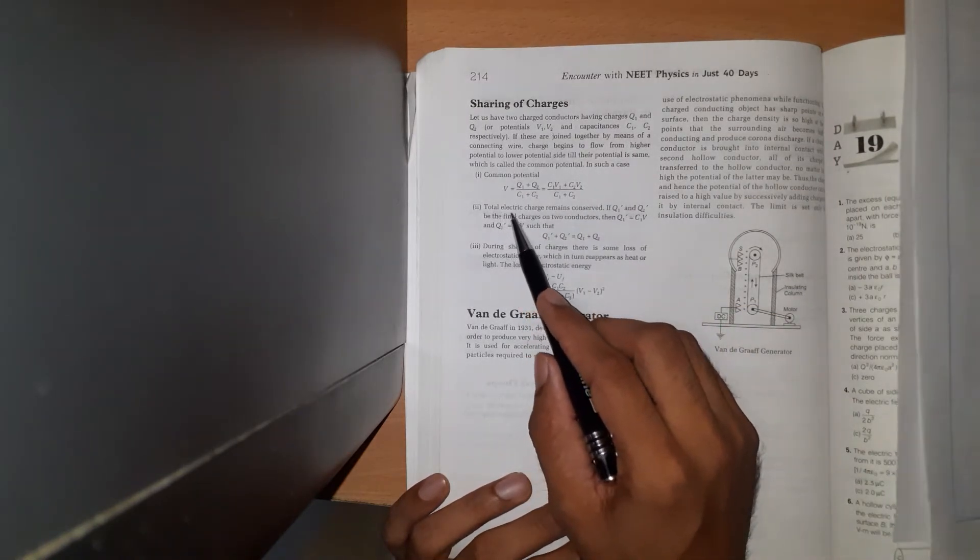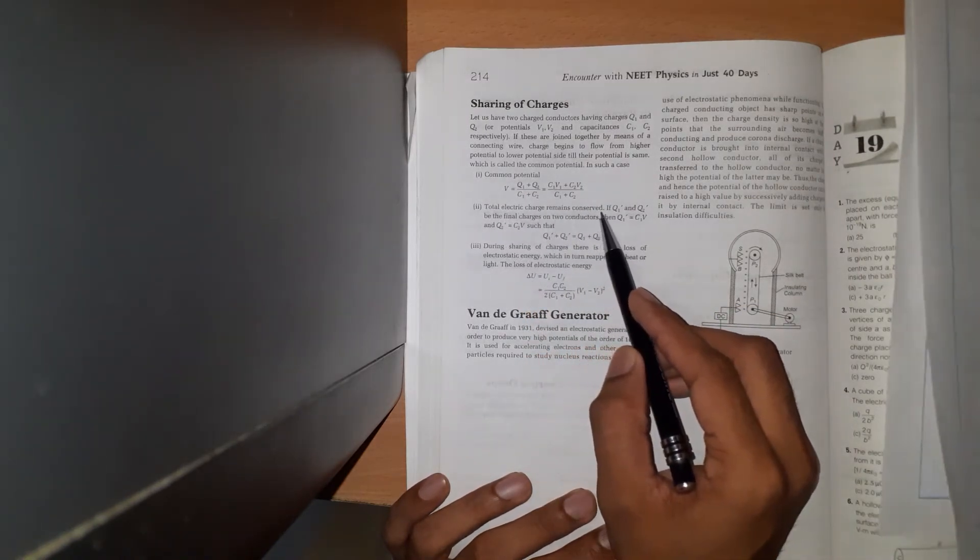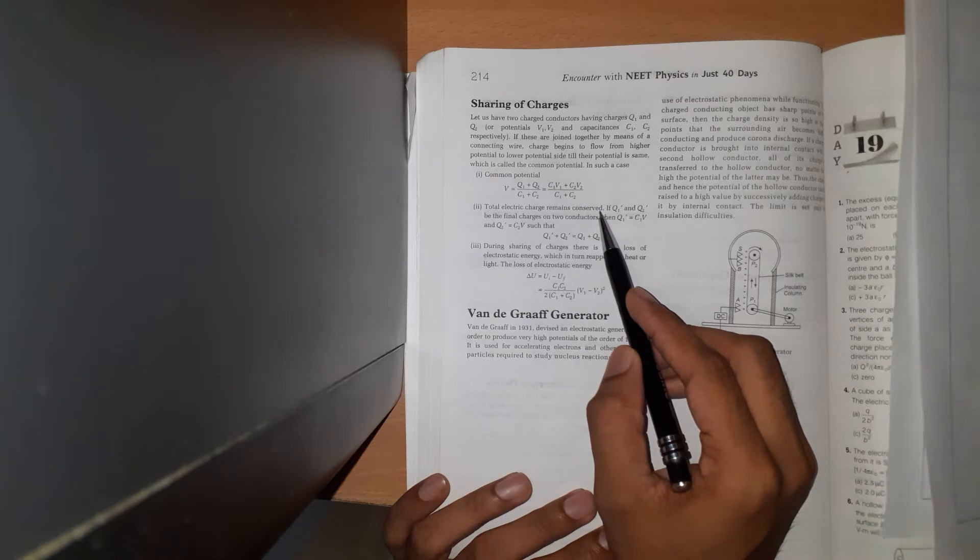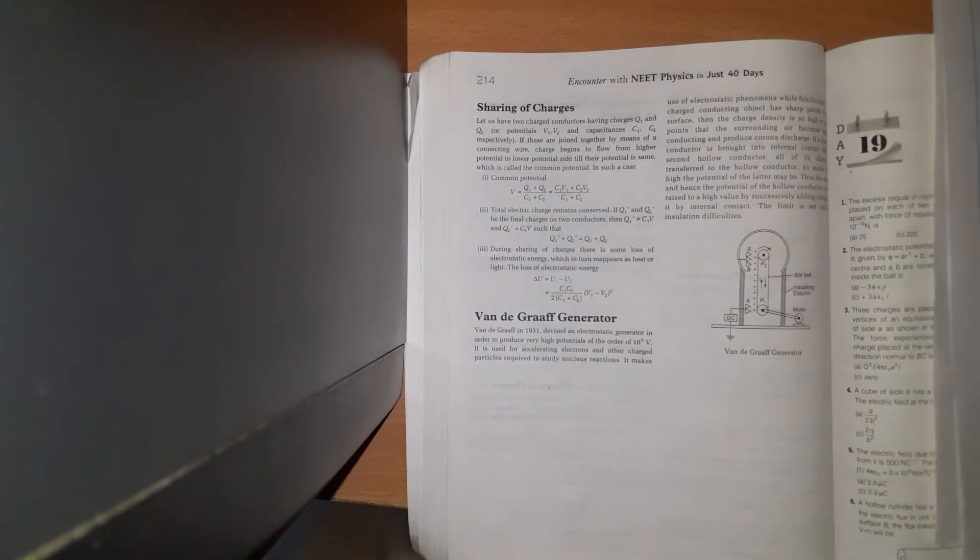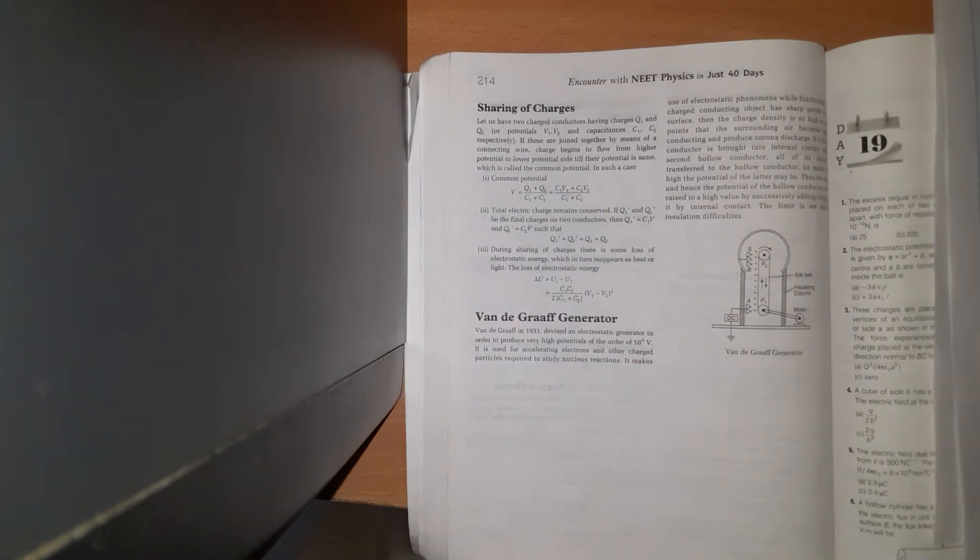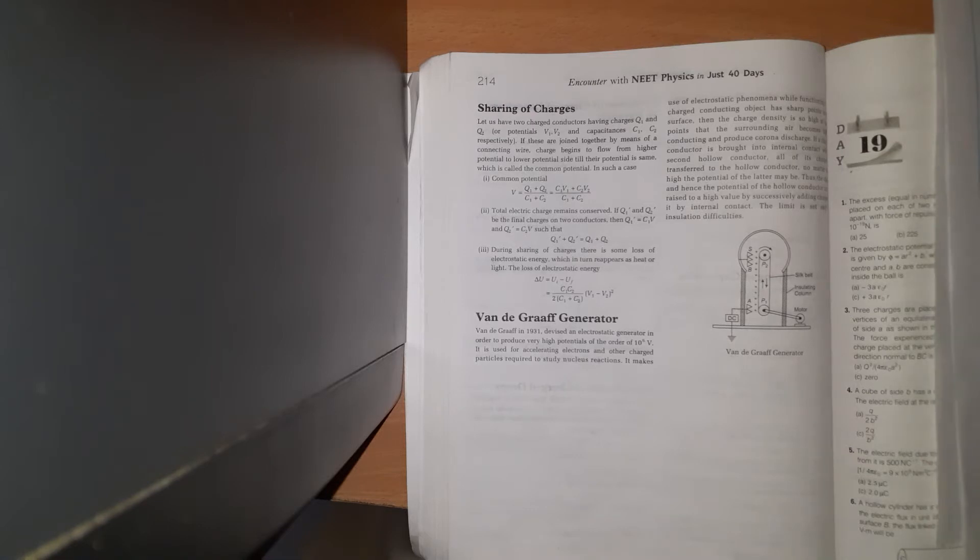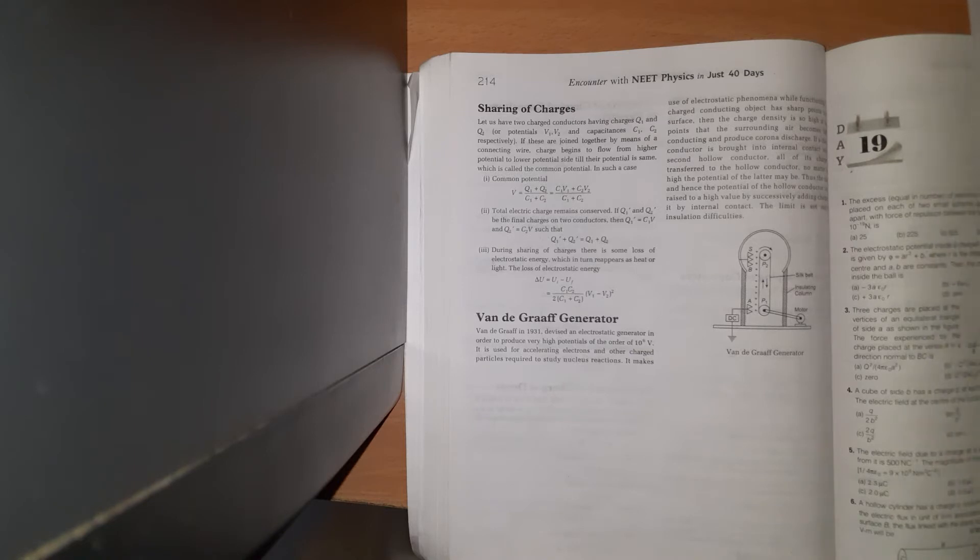The total electric charge remains conserved. Charge is not created or destroyed, only transferred from one body to another. If Q1' and Q2' are the final charges on the two conductors, then Q1' equals C1 V and Q2' equals C2 V, such that Q1' plus Q2' equals Q1 plus Q2.